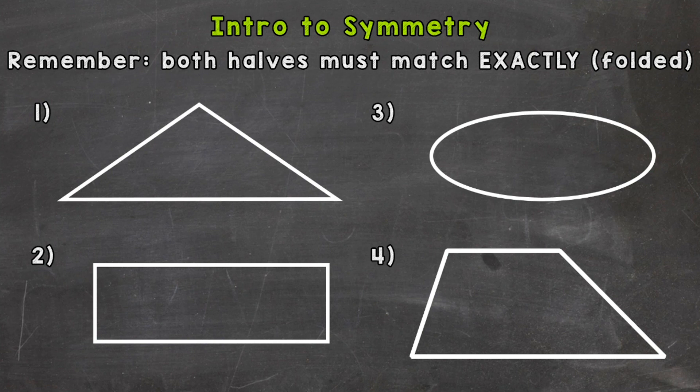Let's jump into number one here where we have a triangle. We're going to look for a line of symmetry. That means a line that we can fold this shape along and both halves must match exactly.